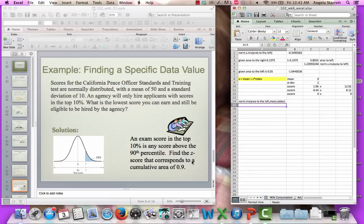Scores for the California Peace Officer Standards and Training Test are normally distributed with a mean of 50 and a standard deviation of 10. So I've got a mean of 50, I've got a standard deviation of 10. An agency will only hire applicants with scores in the top 10%. So I know the area to the right is 0.10. That's the top 10%, area to the right. What is the lowest score you can earn and still be eligible to be hired by the agency? An exam in the top 10% is any score above the 90th percentile, as we can see by our graph here. So what do we want to do? We need the area to the left. Well, if the area to the right is 10%, it makes sense that the area to the left is going to be 0.9.